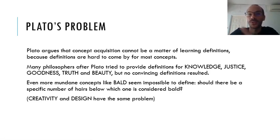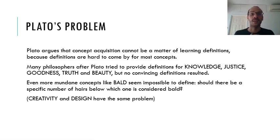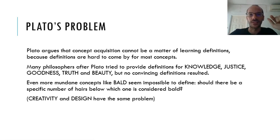Classical theory of concepts rests on definitions. But definitions have a problem that was identified as far back as Plato: we cannot really find clear definitions for high-level concepts such as knowledge, justice, and goodness. Even more mundane concepts such as 'bold' are very hard to strictly define. I believe creativity and design belong to this category, and definitions for those will always be hard to find if we're seeking a very strict and clear one.